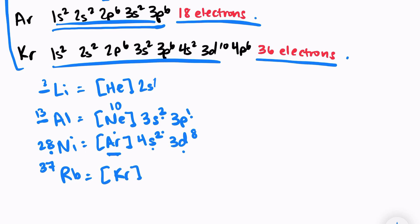Krypton has 36 electrons. It ends with 4p6, which means rubidium is just krypton 5s1. And that's all that we would have to write for the electron configuration of rubidium.